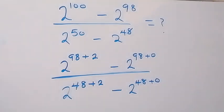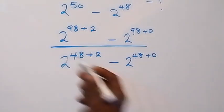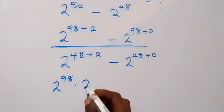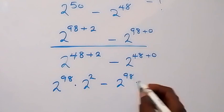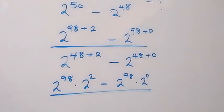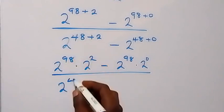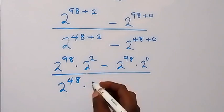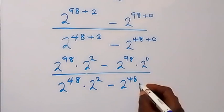Next we can apply the law of indices here. I separate this to have two bases: that will be 2 raised to power 98 times 2 raised to power 2, then minus 2 raised to power 98 times 2 raised to power zero, divided by 2 raised to power 48 times 2 raised to power 2, then minus 2 raised to power 48 times 2 raised to power zero.